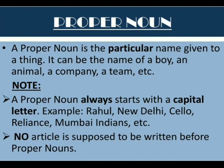We will start with proper noun first. The definition of proper noun is: a proper noun is the particular name given to a thing. It can be the name of a boy, an animal, a company, a team, etc. For example, a particular name of a boy can be Rohan, Soham, etc.